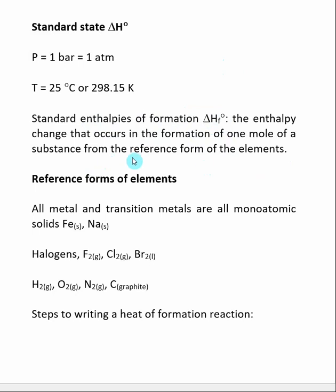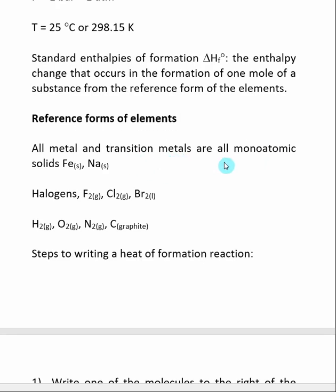The first thing we need to discuss is what's the reference forms of the elements. The way I like to think about it is it's how the elements are typically found in nature. All metals and transition metals are all monoatomic solids. So like Fe solid and Na solid are in their reference state.